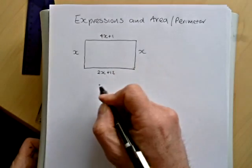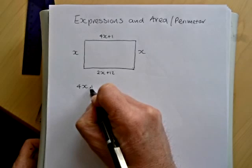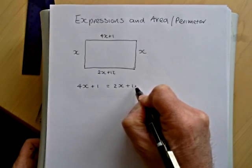So we could form an equation here because those two lengths, if they're in a rectangle, must be the same and it must be true that 4x plus 1 equals 2x plus 12.